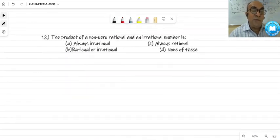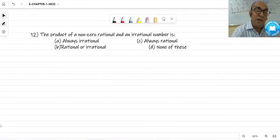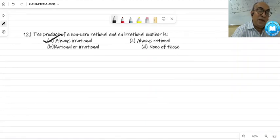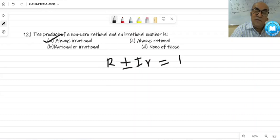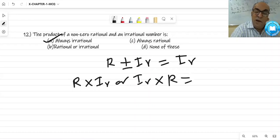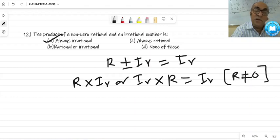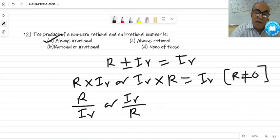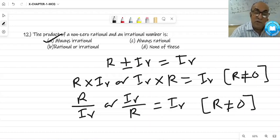Question number 12. The product of non-zero rational number and irrational number is always irrational. You just copy this rule: rational plus minus irrational equals irrational. Rational into irrational or irrational into rational equals irrational. Condition is R should not be equal to 0. Here it is written non-zero. Similarly, rational divided by irrational or irrational divided by rational also equals irrational, but rational number should not be equal to 0. If you know these four rules, you can answer it easily. So we completed this MCQ.